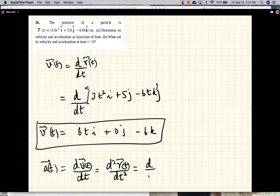It's the derivative of the velocity, the time derivative of the velocity, which is this function 6ti plus 0j minus 6k.